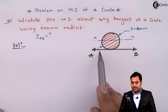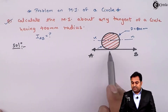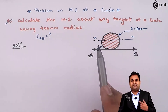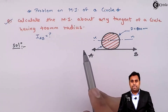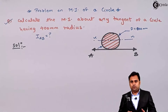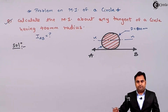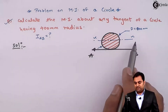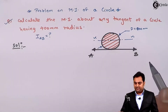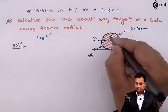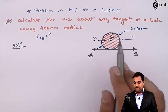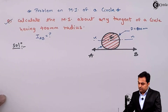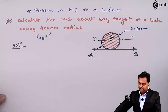Tangent AB is parallel to the x-axis, so we can use the parallel axis theorem. That theorem is used when we have to calculate moment of inertia about any axis which is parallel to the centroidal axis. Here, XX is passing through the centroid, so it becomes the centroidal axis.